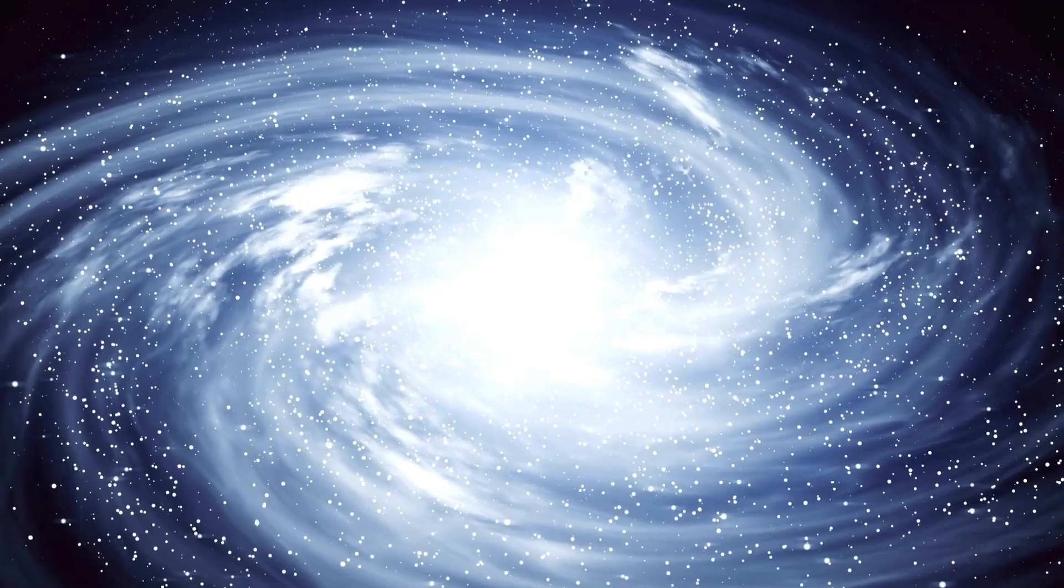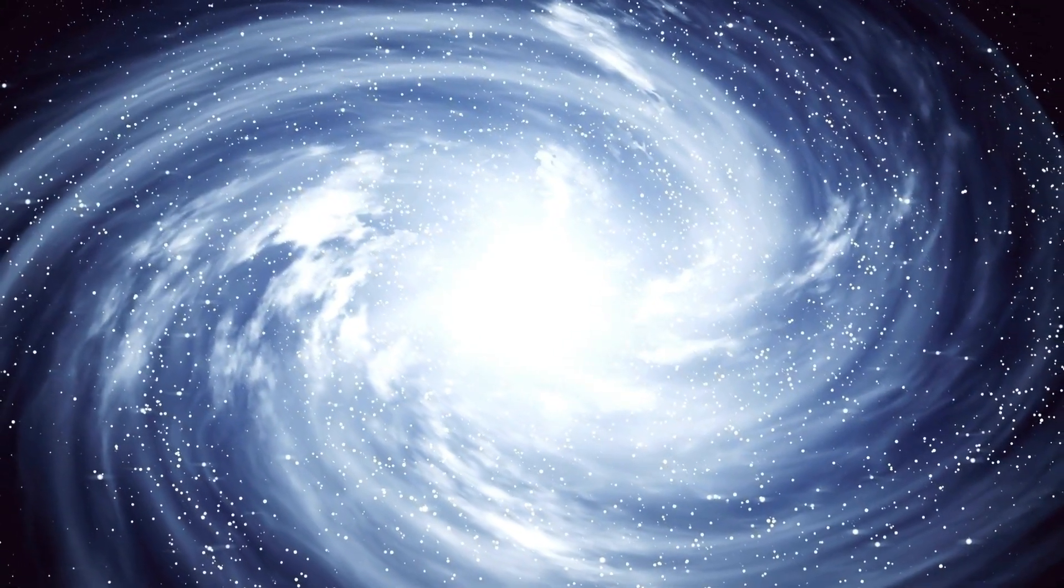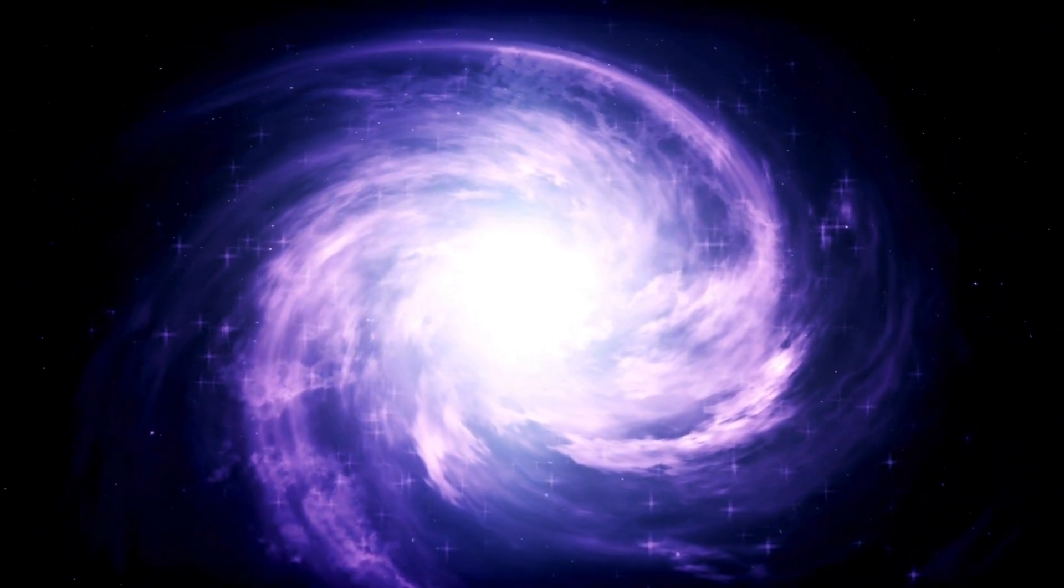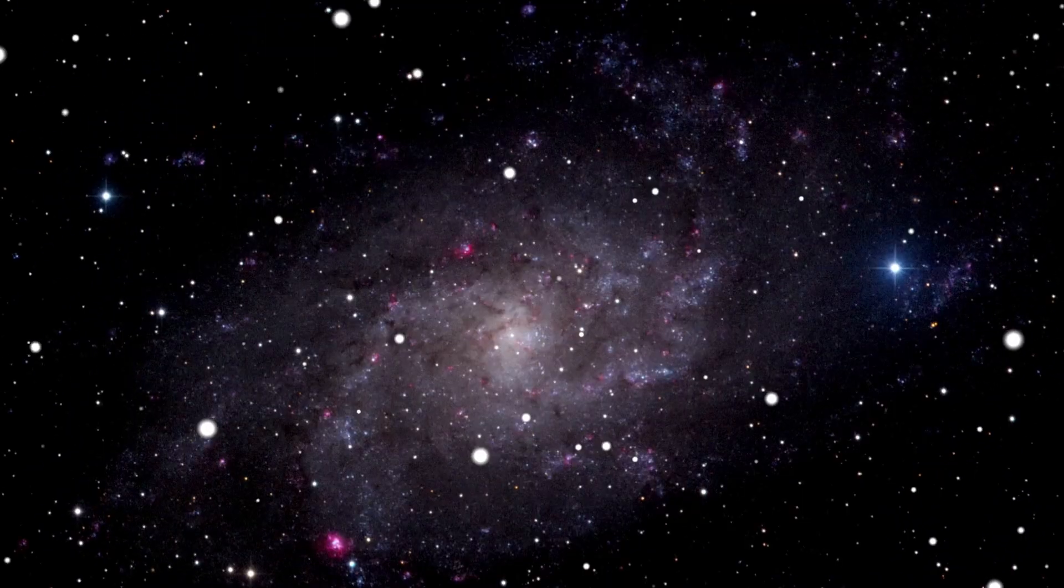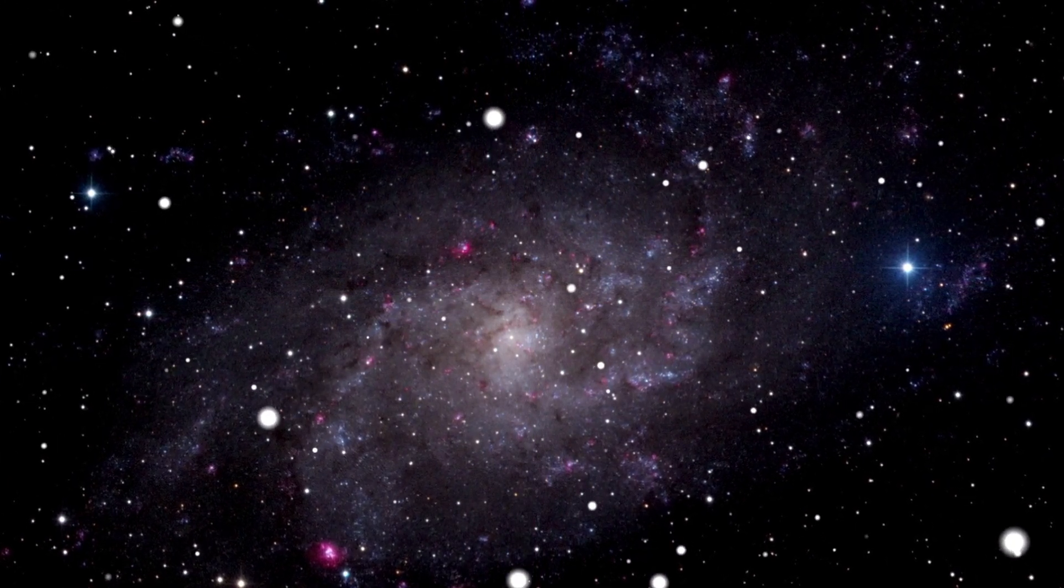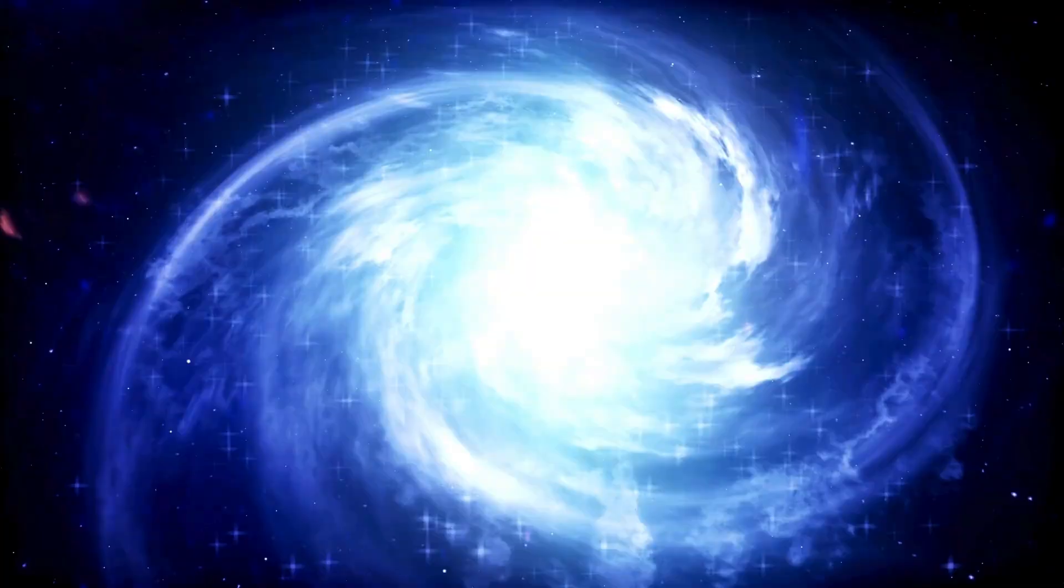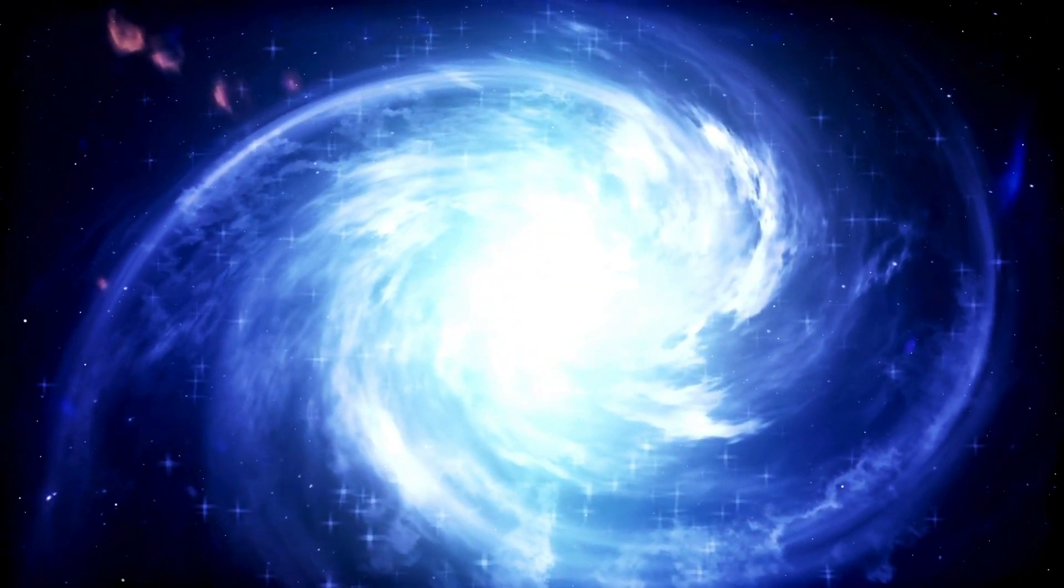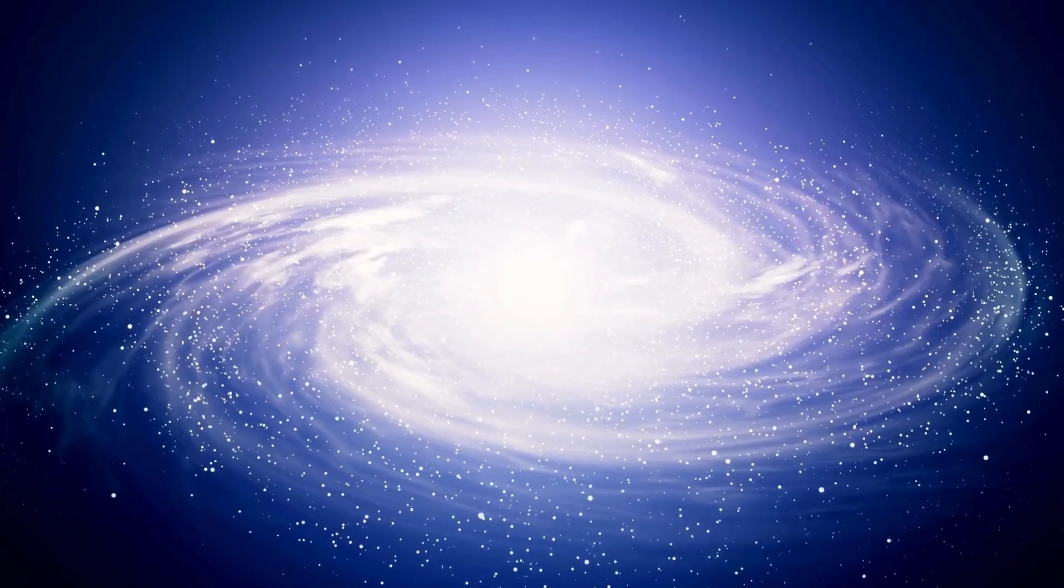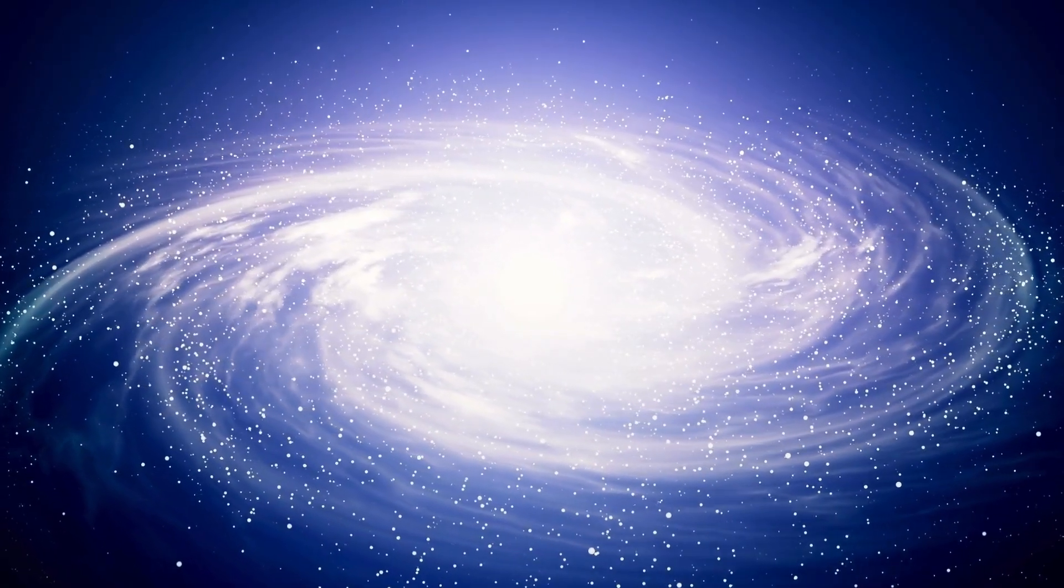One of the most compelling theories about the formation of black holes is that they are created from collapsed stars. When a star exhausts all of its fuel, it can no longer produce enough energy to counteract the force of gravity that is constantly pulling inward. As a result, the star begins to collapse in on itself, becoming smaller and denser as it does so. If the star is massive enough, this process can continue until it becomes a singularity.